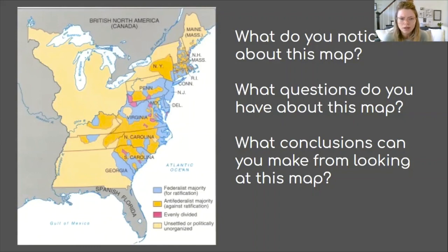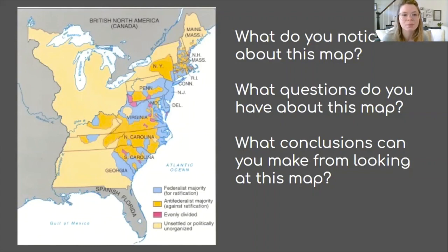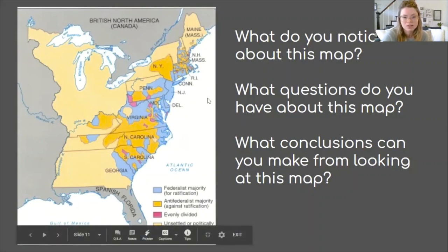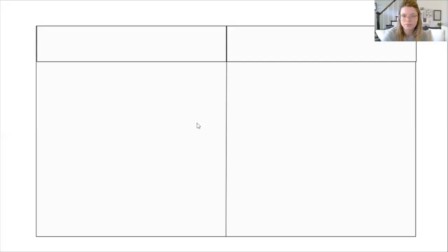A question I have is what's going on with the light peach color. Looking at my key, this is unsettled or politically unorganized — meaning these areas weren't really settled yet, not official areas. From this map, I know as a history teacher that the constitution gets ratified because it's what we have now, so I know the federalists won. But it's still important to look at the distribution: the orange anti-federalist areas are mostly concentrated in the south and in a pocket in New York.